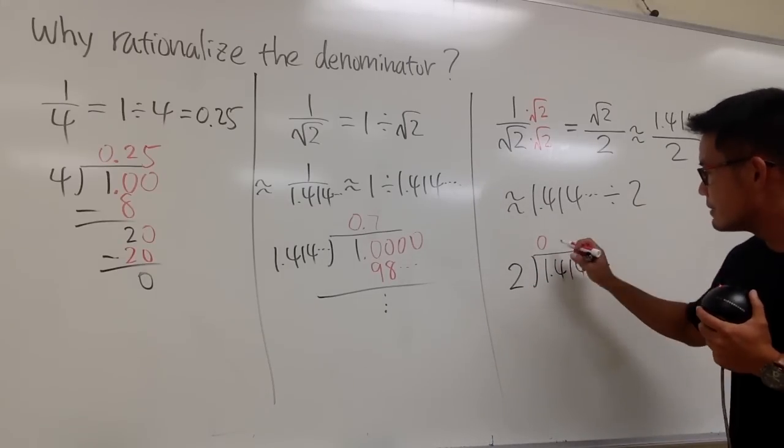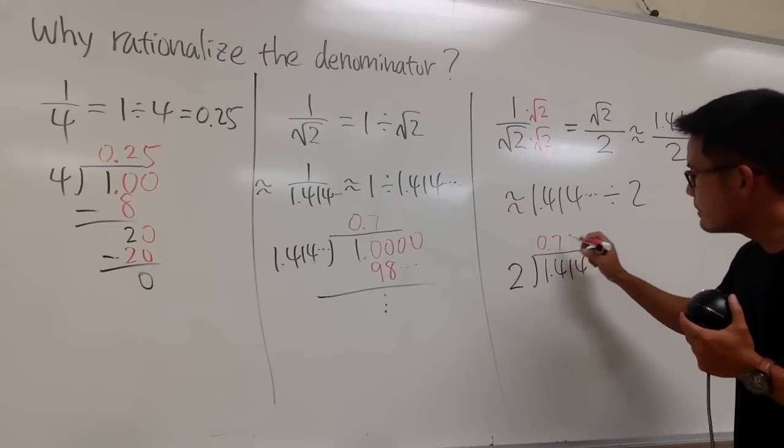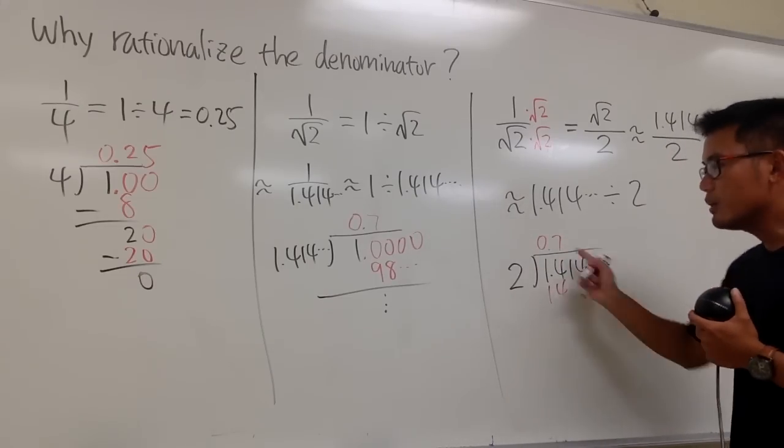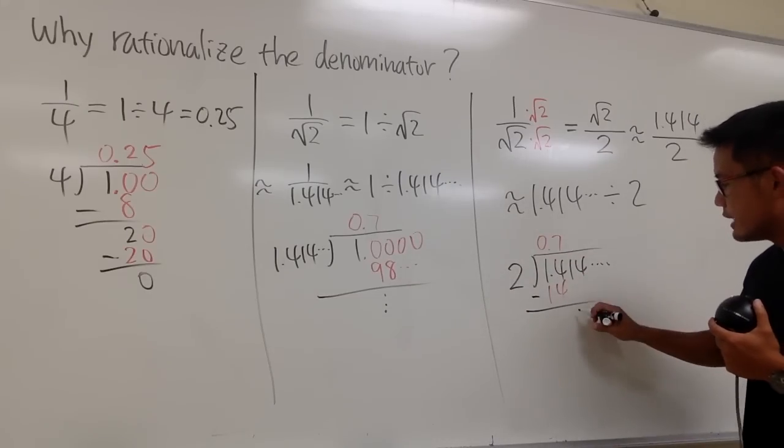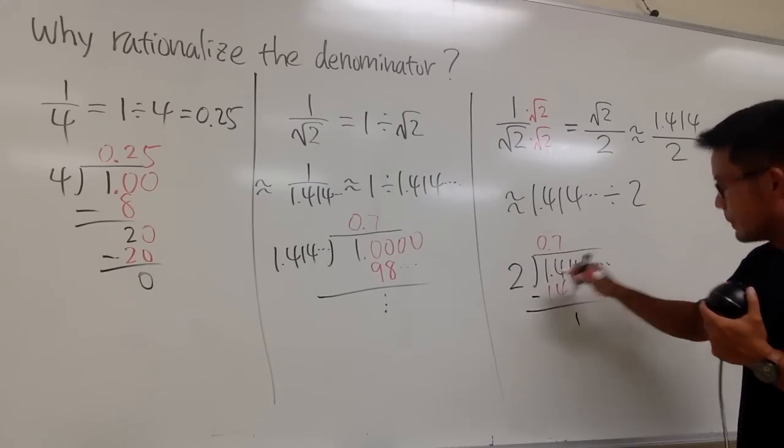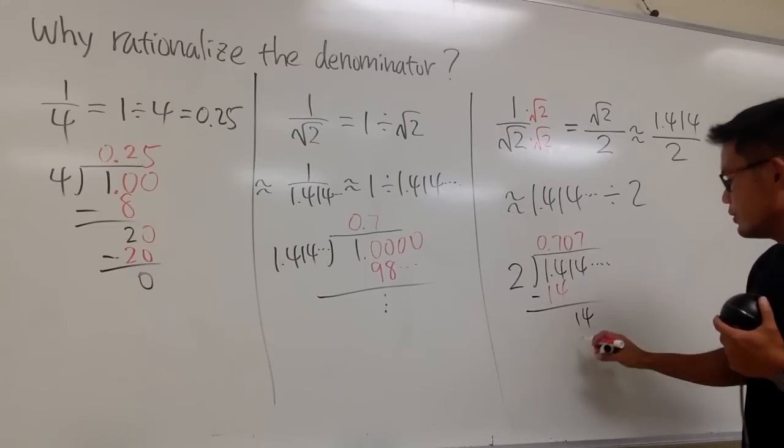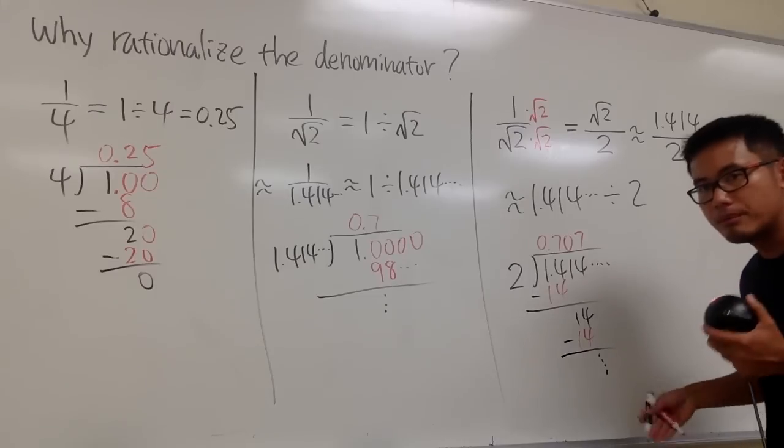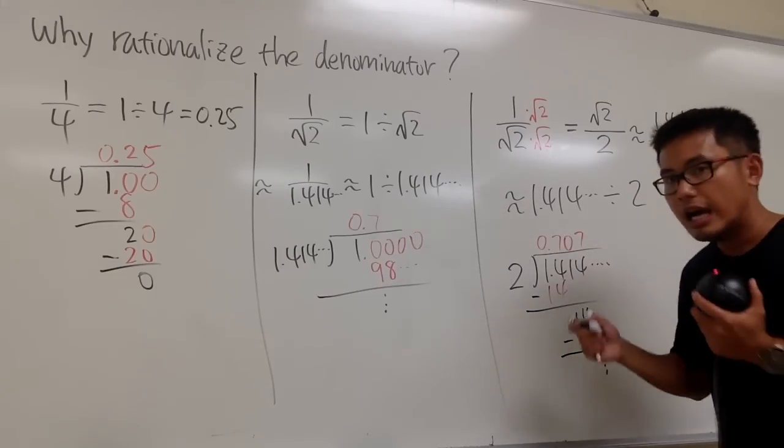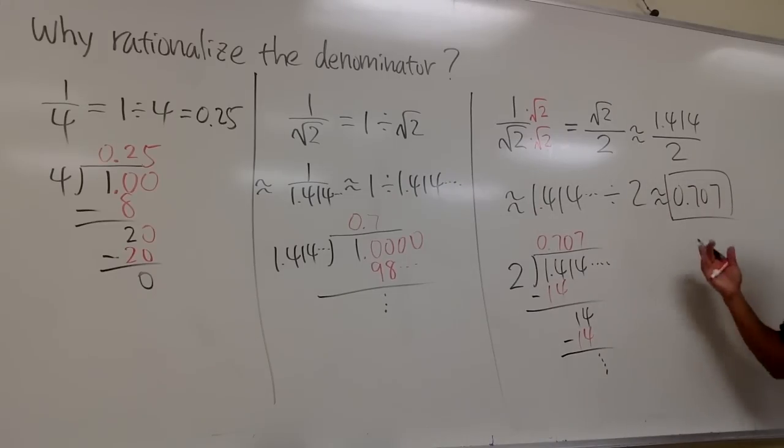2 goes into 1, 0 times, and you put a decimal point. 2 goes into 14, look at this is 14, which is 7 times. 7 times 2 is 14, like this. It matched so far. And you subtract. Well, this is 0. You bring this down. 2 goes into 10, 0 times, and you once again bring down the 4. 2 goes into 14, 7 times, and you know this is 14, and so on. We're not done yet. I don't know what's the next number. But you see, this right here, I can tell you a much better answer with ease, because you know this is 0.707 approximately speaking. So much easier, isn't it?